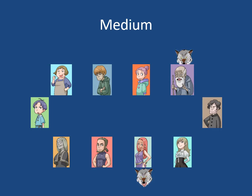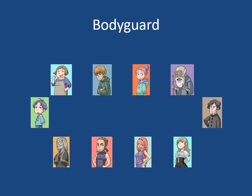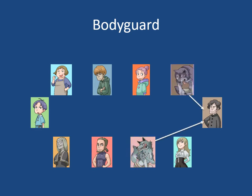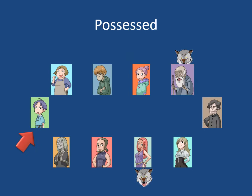This standard rule starts from the Italian version of the werewolf game called Lupus in Tabula, and this is our standard AI rule. If someone is executed, the Medium will be told by the game master whether they are a wolf or not. There is also a role called Bodyguard, who can protect someone at night. If someone is attacked but is also protected by the Bodyguard, that person is not killed — however, the Bodyguard cannot protect themselves. There is also a role called Possessed, which is just a villager, but whose goal is to deceive others and help the werewolf. If the werewolf wins, the Possessed also wins.